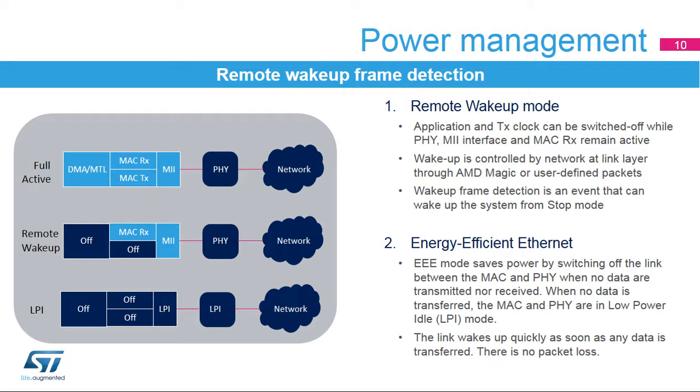Energy-efficient Ethernet mode is available only in full duplex at 100 megabits per second operation mode with the MII interface.